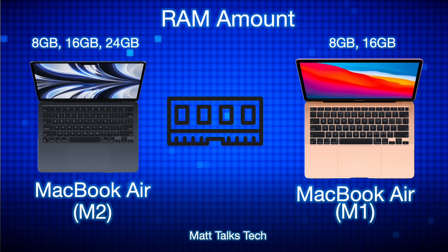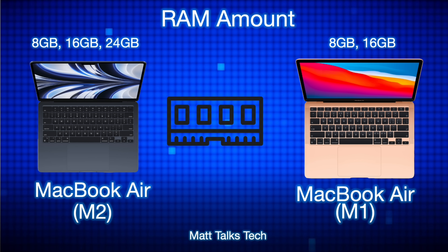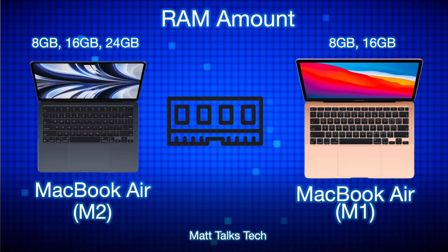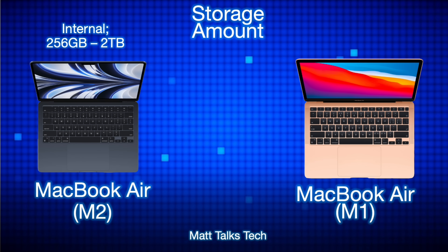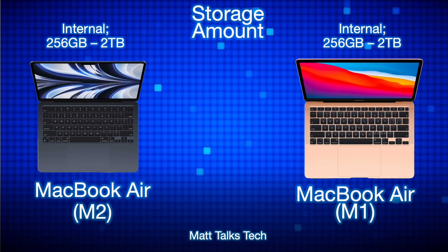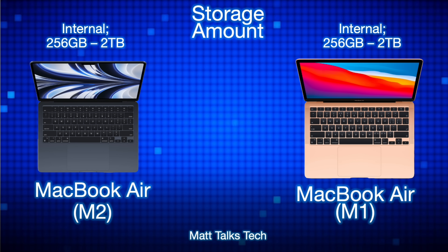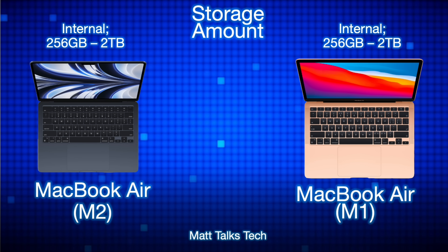RAM has also changed slightly. The MacBook Air M1 offered a choice of 8 or 16 gigabytes, but the MacBook Air M2 now adds a 24 gigabyte option. For storage, it's identical for both — starting at 256GB, with options of 512GB, 1TB, and 2TB.